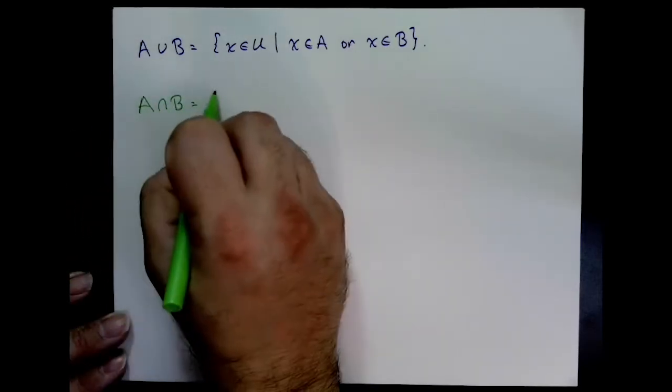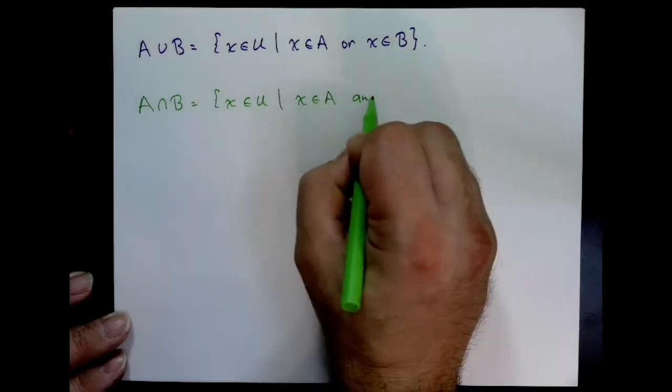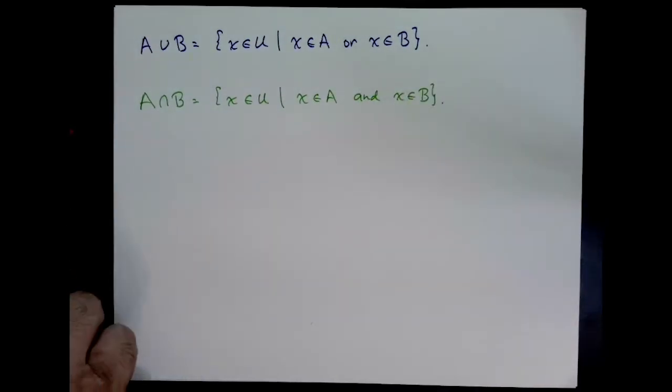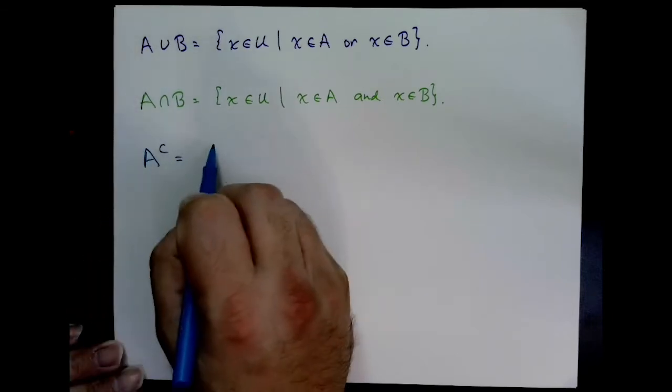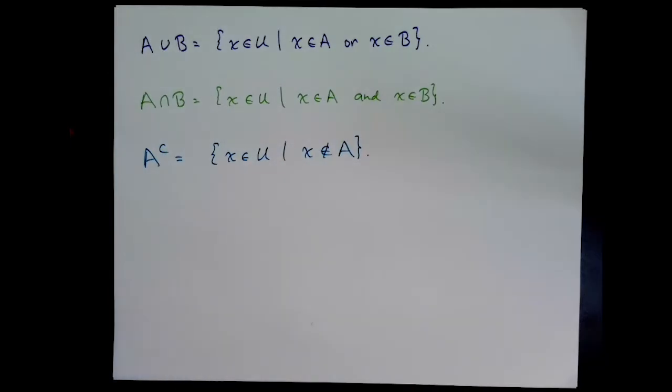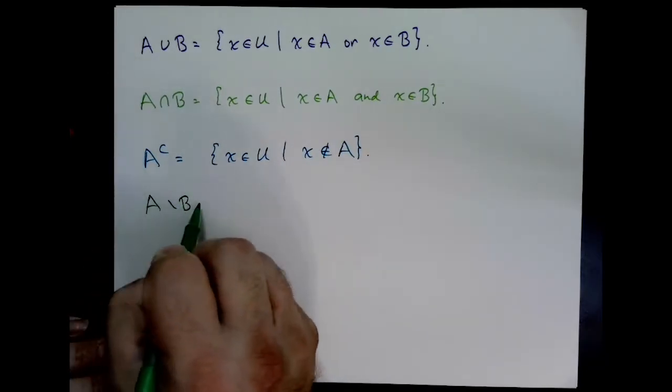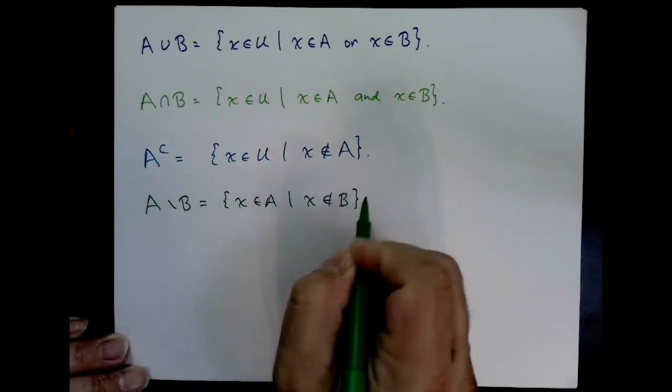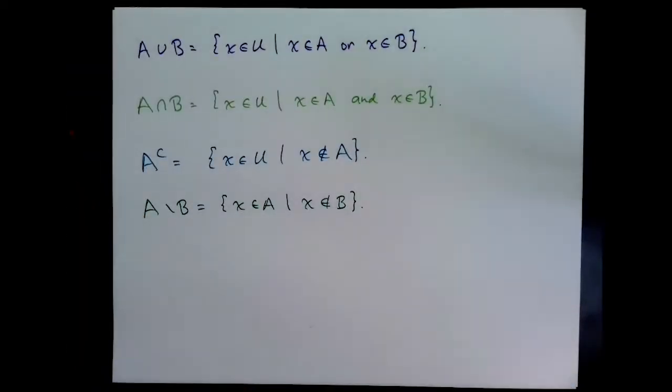We define the union of A and B to be all points that are either in A or in B or both. It's like an inclusive OR. We define the intersection of A and B to be all points that are in both A and B. The complement of A is the set of all points not in A. The set A minus the set B is the set of all points of A that are not in the set B.